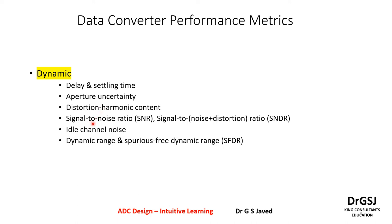Next is signal-to-noise ratio and signal-to-noise and distortion ratio (SINAD). This is both a power parameter and a frequency parameter — it tells you how much signal power is present relative to the in-band noise power. Taking the ratio gives the signal-to-noise ratio in terms of power or signal amplitude. Then there is the idle channel noise: when there is no input present, how much noise is present — that is the idle channel noise.